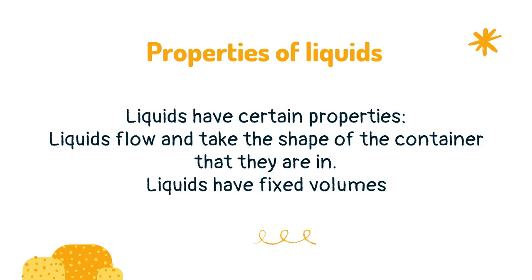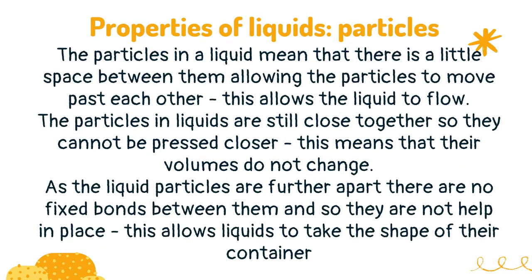Liquids have certain properties. Liquids flow and take the shape of the container that they are in. Liquids have fixed volumes. The particles in a liquid have a little space between them, allowing the particles to move past each other — this allows the liquid to flow. The particles in liquids are still close together so they cannot be pressed closer, meaning their volumes do not change. As the liquid particles are further apart there are no fixed bonds between them and so they are not held in place, allowing liquids to take the shape of their container.